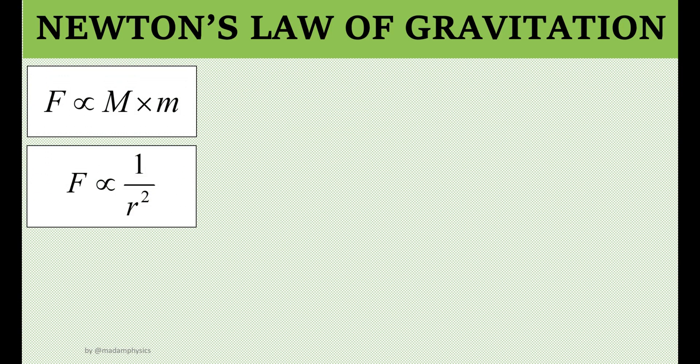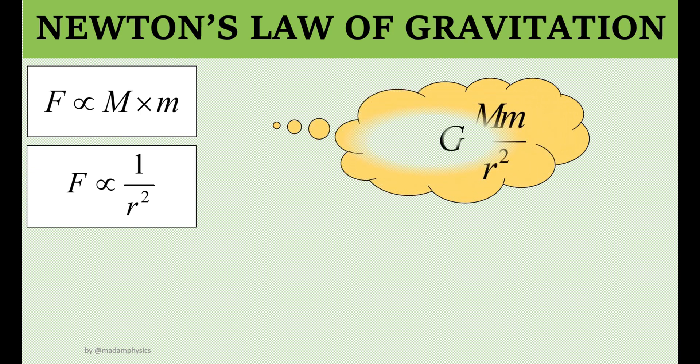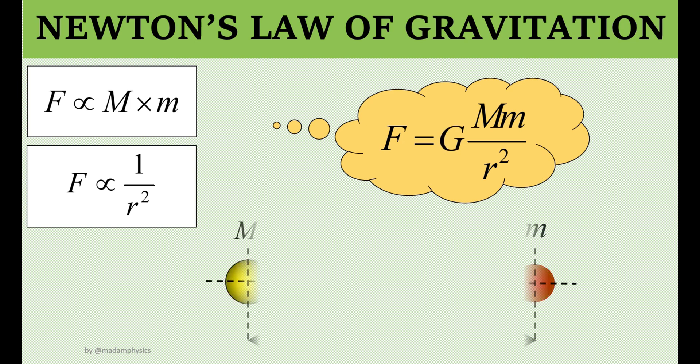With these two relations, we can now calculate the value of gravitational force by multiplying the product of the two masses with constant G and dividing it by the square of the centre-to-centre distance. Here is our main equation. The forces between the two objects have the same magnitude but opposite in direction.